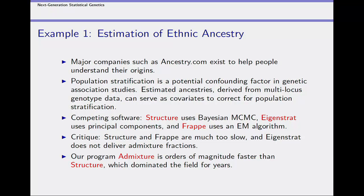The first example is ancestry estimation. People are interested in their ancestry for various historical reasons, and ancestry also becomes an issue when correcting for confounding in genetic association studies. I got interested in this area a few years ago because the existing software used a Bayesian MCMC method for estimating ancestry, and it was taking a month of computing time on a single desktop computer to do many of the calculations. In retrospect, that seemed unacceptable to me.